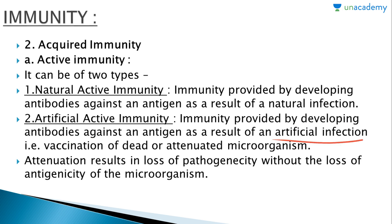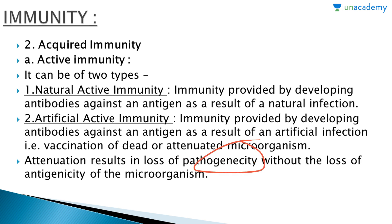Vaccination uses dead or attenuated microorganisms. Attenuation is the process which results in the loss of pathogenicity without the loss of antigenicity — meaning the microorganism becomes harmless but is not dead. It still functions as a foreign particle in our system so that our immune system can identify it and form antibodies against it. This is how artificial active immunity is provided and used in vaccination and immunization programs.